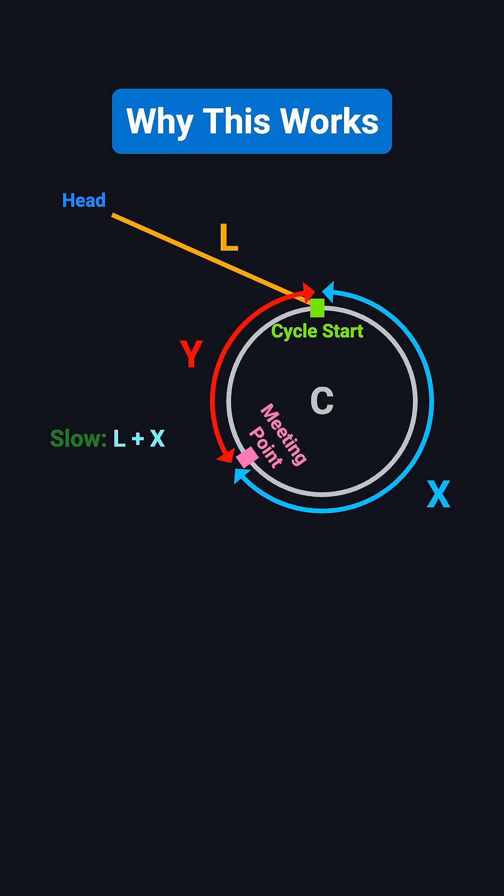The slow pointer travels L plus X steps to reach the meeting point, and the fast pointer travels twice that distance, which is 2 times L plus X. Because the fast pointer has made extra full laps around the cycle, we can say 2(L + X) equals L + X + nC. Simplifying this gives L + X equals nC, which means L equals nC minus X.